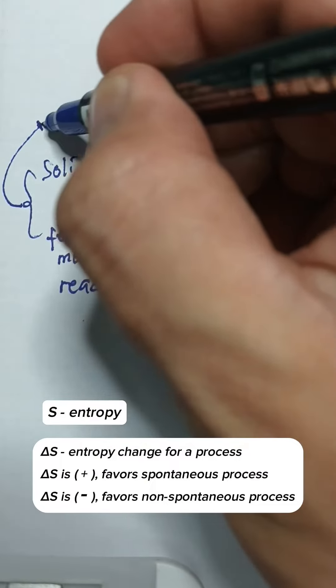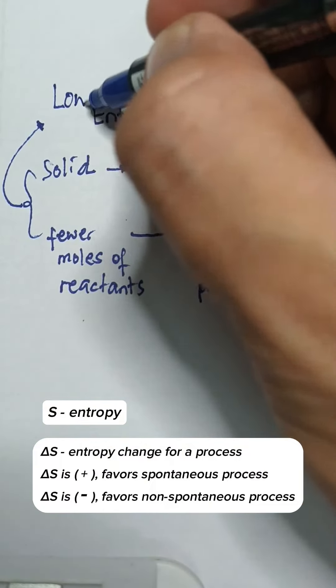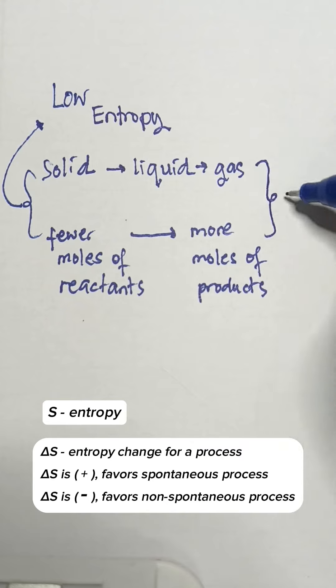If delta S is positive, it means that the process favors spontaneity. On the other hand, if delta S is negative, the process is non-spontaneous.